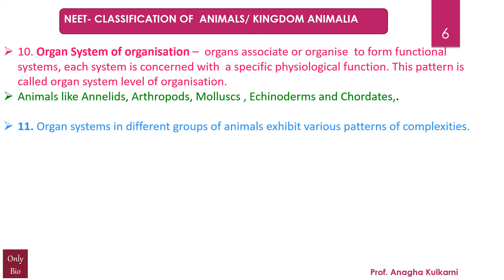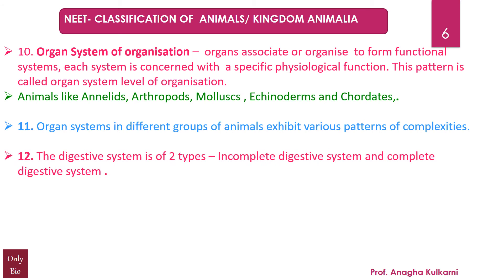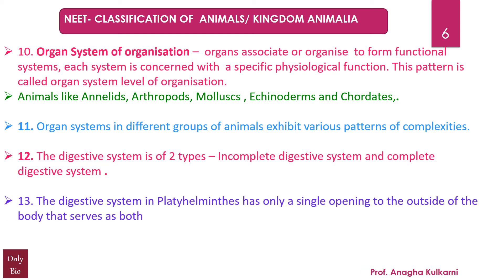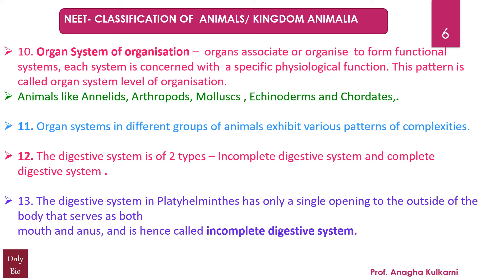Organ systems in different groups of animals exhibit various patterns of complexities. The digestive system is of two types: incomplete digestive system and complete digestive system. The digestive system in platyhelminthes has only a single opening to the outside of the body that serves as both mouth and anus, and is hence called an incomplete digestive system.